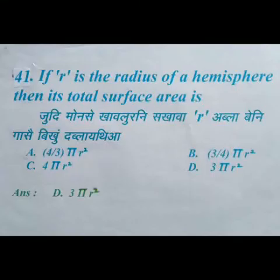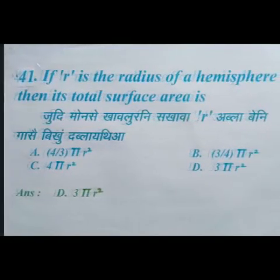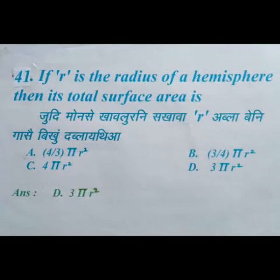If R is the radius of a hemisphere, then its total surface area — we have four options and the right answer is option D: 3 pi r square.